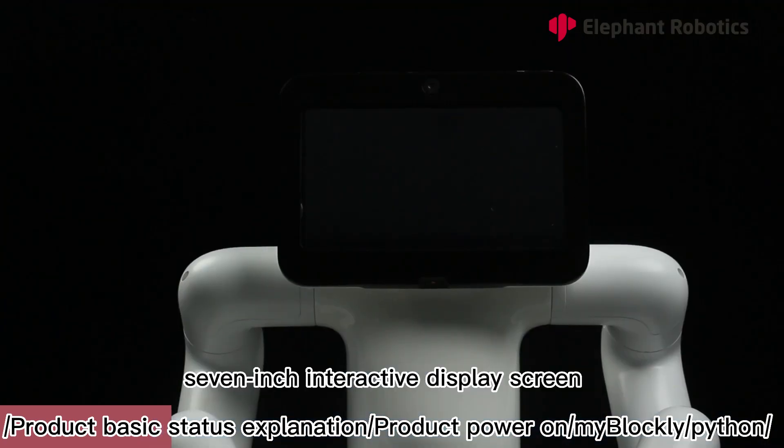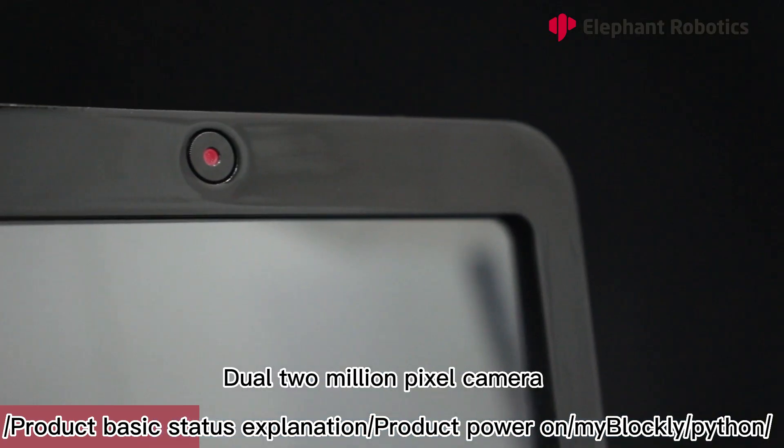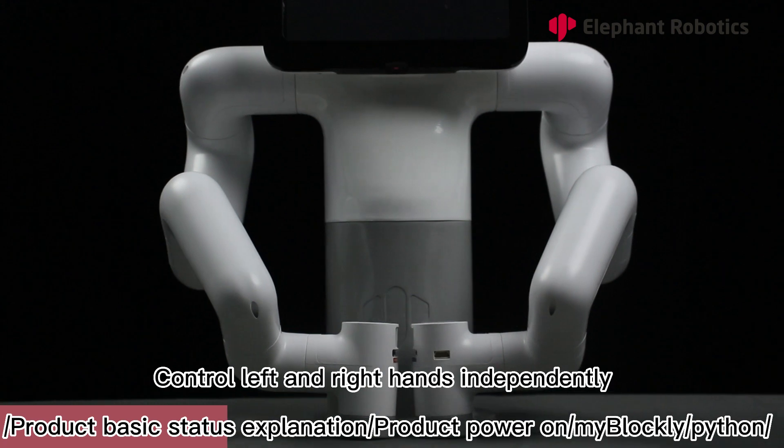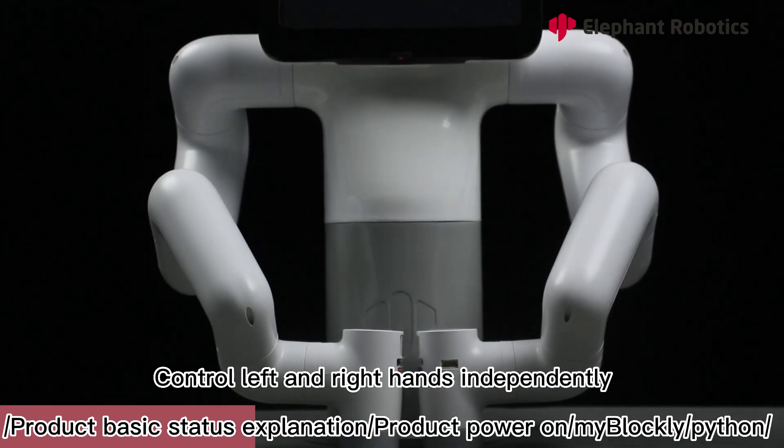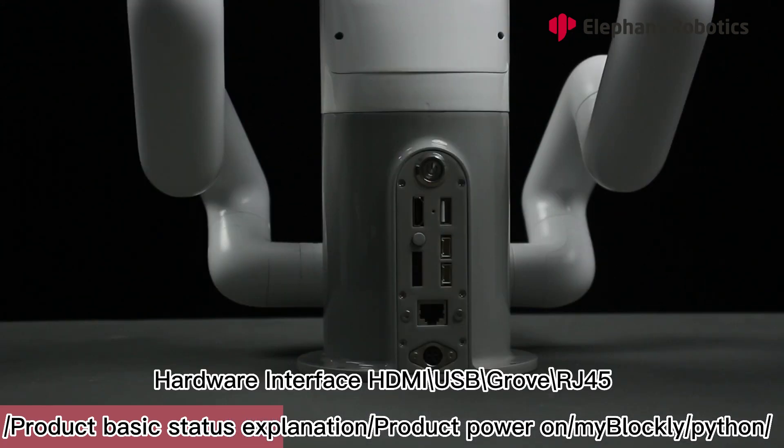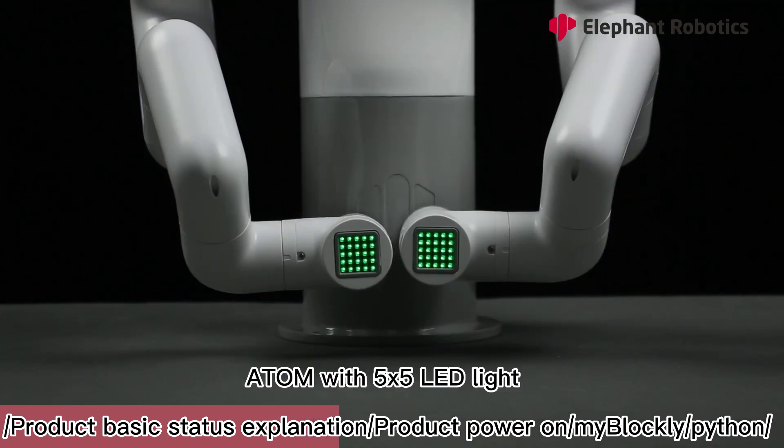7-inch interactive display screen. Dual 2 million pixel camera. Control left and right hands independently. Hardware interface HDMI, USB, Grove, RJ45. Atom with 5 Ohms 5 LED light.